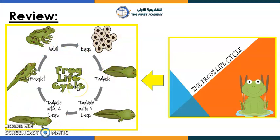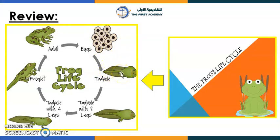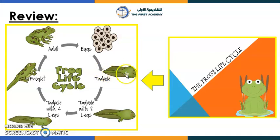Six stages — excellent! Let's start from the first stage. What can you see? Eggs! When the egg hatches, you can see the tadpole — excellent! The tadpole comes out of the egg, and then we have the tadpole with two legs. Look at the tadpole here — this tadpole has no legs, while this one has only two legs.